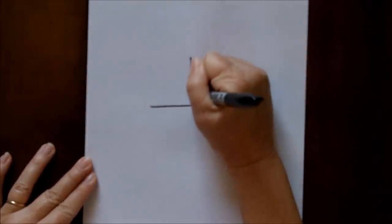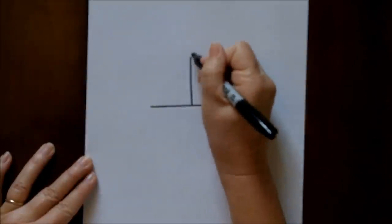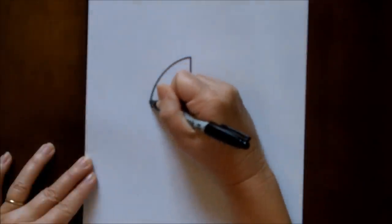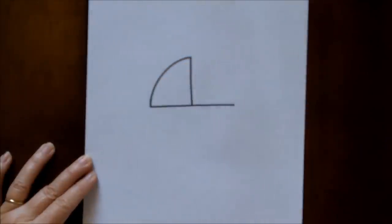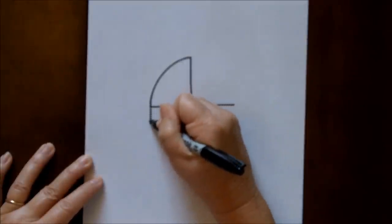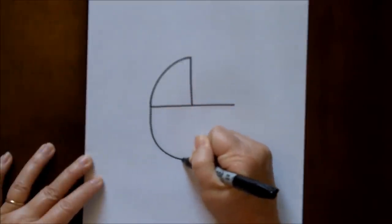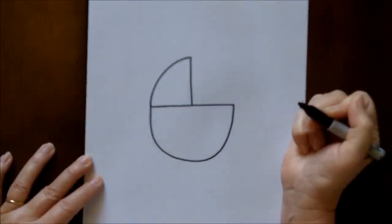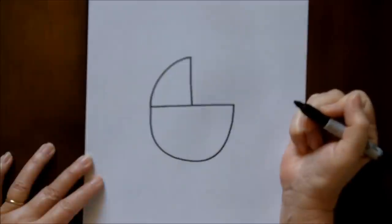Then we are going to make a curved line between the top of this line and the end of this line. Then we're going to make a U-shape that attaches this side of the line to this side of the line, just like that. That's the basic shape of the carriage.